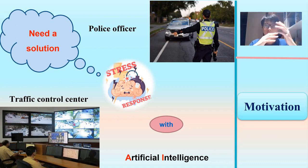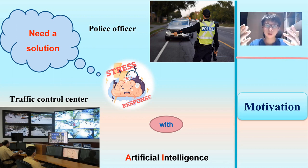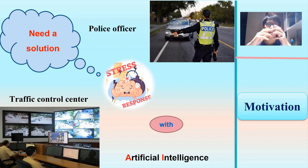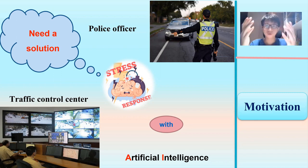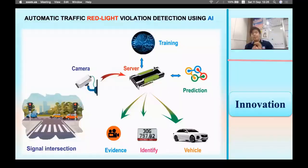Due to the advancing image processing techniques, we have built a system to monitor and manage traffic at intersections. Situations such as entering a forbidden road or running a red light still require staff to monitor. Prior to such difficulties, our team has come up with a solution — a detection system for automated traffic violation.